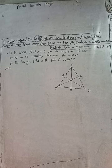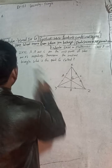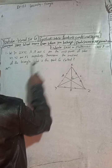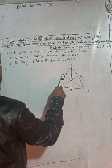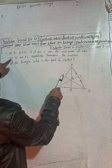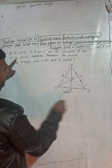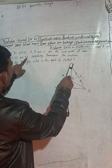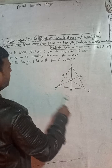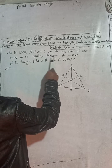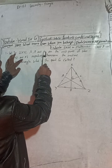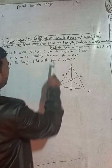The question is: in triangle XYZ, A, B, and C are the midpoints of the sides. A is the midpoint of XY, B is the midpoint of YZ, and C is the midpoint of XZ respectively.